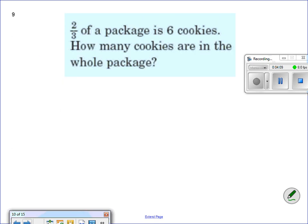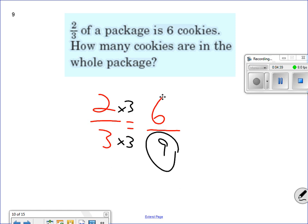2 thirds of the package is 6 cookies. How many cookies are in the whole package? So 6, once again, is my numerator. 2 thirds, my fraction, into 6. So I've got to find out what this denominator is. As soon as you have this set up, kids, it's easy. So all you have to find out is what you're looking for. Is it part of the whole or is it the whole? 2 times 3. 3 times 3 gives me 9. My whole package is 9.